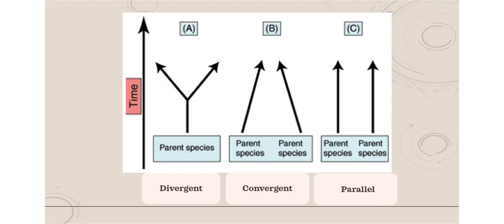Other types of evolution include divergent, convergent, and parallel. Divergent evolution is where a common ancestor splits into two new species. Convergent evolution is where very different, non-contact species evolve to become very similar to each other. Parallel evolution is where two species evolve along their own separate lines but never really come in contact or evolve similarly to each other — it looks like parallel lines.